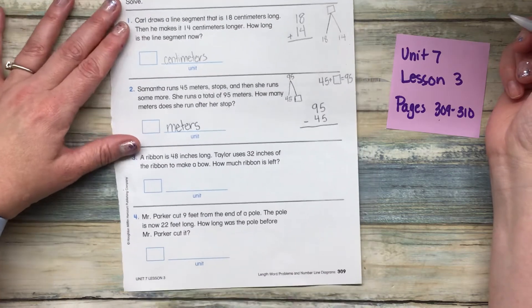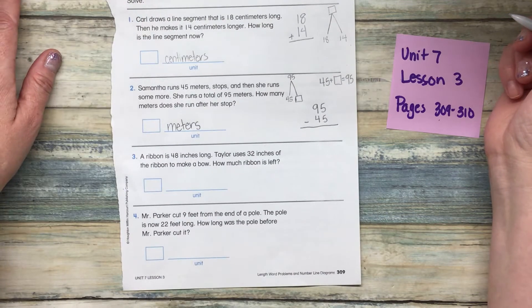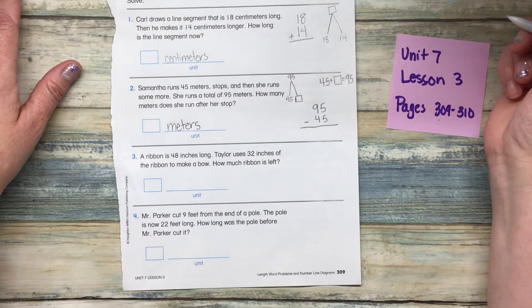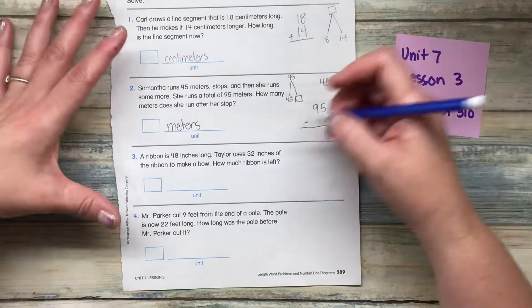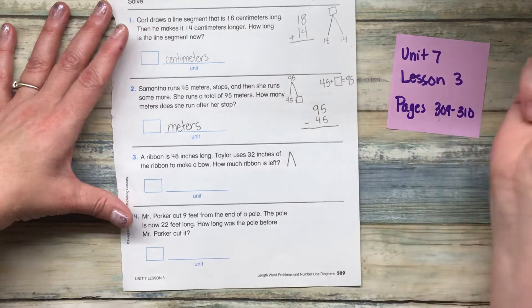Number three, a ribbon is 48 inches long. Taylor uses 32 inches of the ribbon to make a bow. How much ribbon is left?